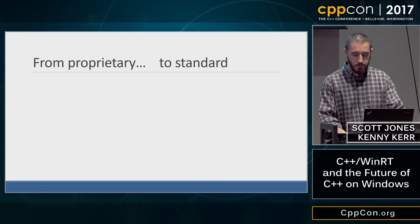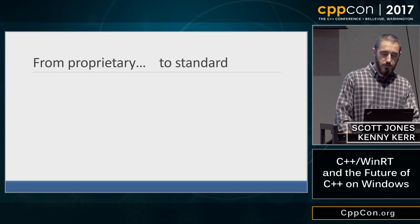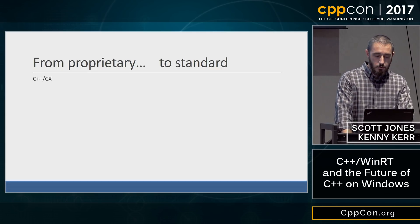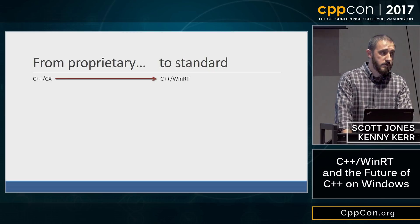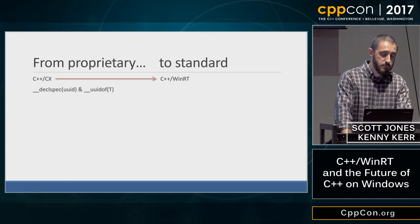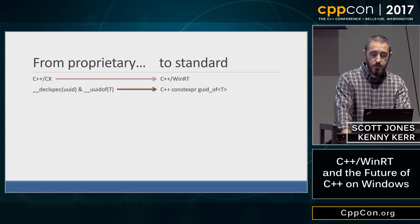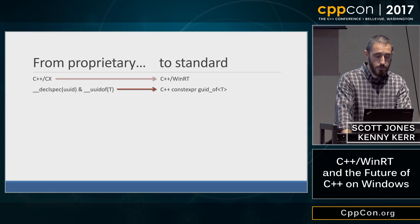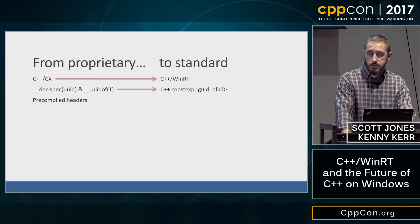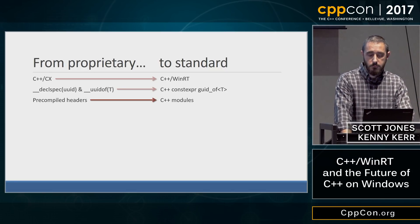One of the big themes of this library is moving from proprietary to standard. One example is C++ CX from the Visual C++ team — we're replacing that with C++ WinRT, turning a bunch of compiler language extensions into something written purely in C++ as a library. Another example is declspec and uuidof, mainstays of COM development for decades — we're replacing those with constexpr functions such as guidof. We're also moving all our emphasis and investment to C++ modules rather than pre-compiled headers.